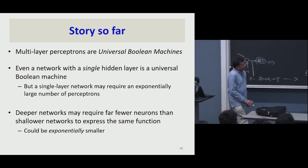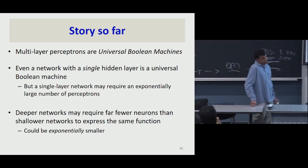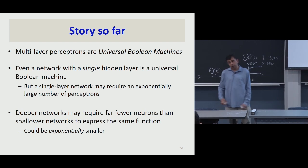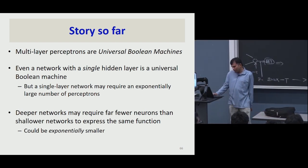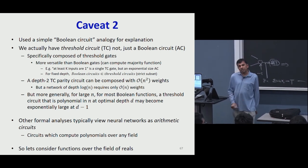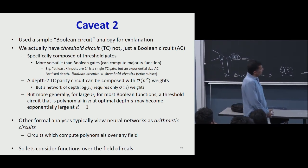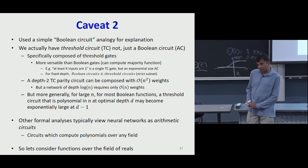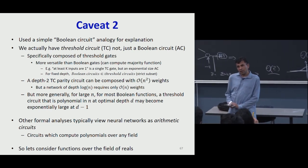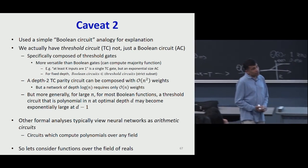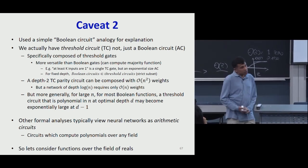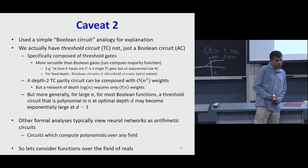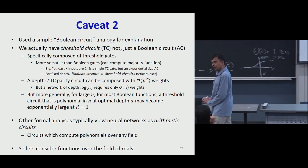Summary so far: an MLP is a universal Boolean function that can represent a given function only if it is sufficiently wide and sufficiently deep. Depth can be traded off with width, sometimes. The optimal width and depth depend on the number of variables and complexity of the Boolean function. Deeper networks may require far fewer — exponentially fewer — neurons than shallower networks to express the same function. One caveat: a perceptron is a threshold gate, not a Boolean gate. A single perceptron can compute Boolean operations that would require an exponential number of standard Boolean gates, such as the majority function.